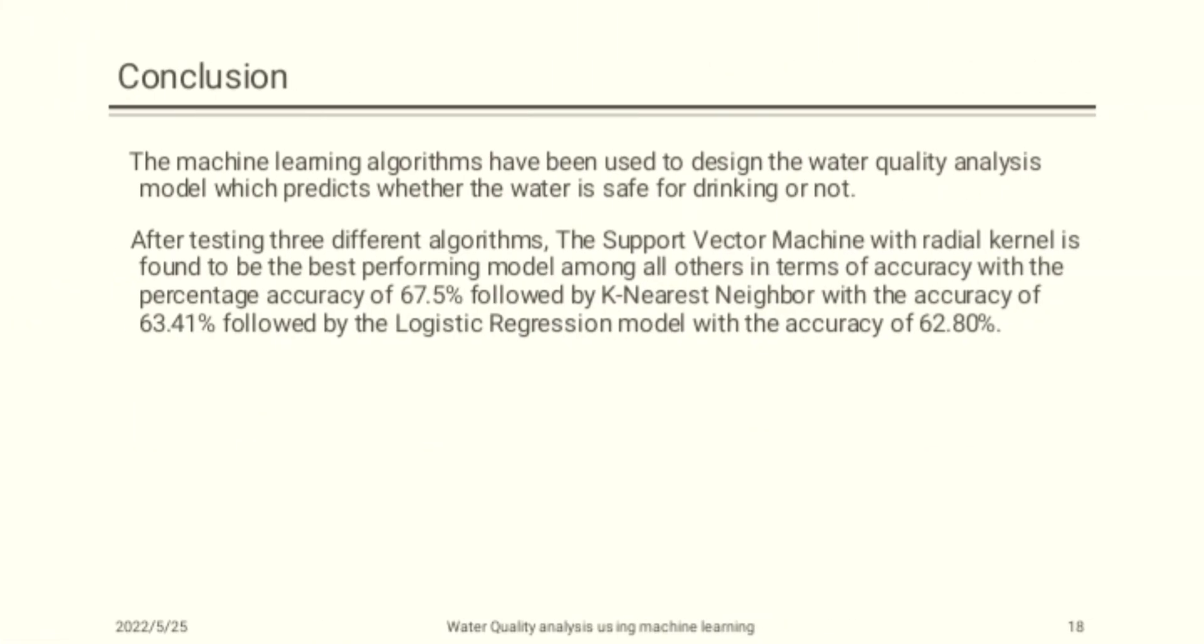The conclusion is, after trying and testing four different algorithms, the best accuracy is achieved by kernel support vector machine, i.e., 67.53%, followed by KNN, i.e., 84.19%, followed by Naive Bayes, i.e., 61.59%, and decision tree performed the worst, i.e., 59.30%.